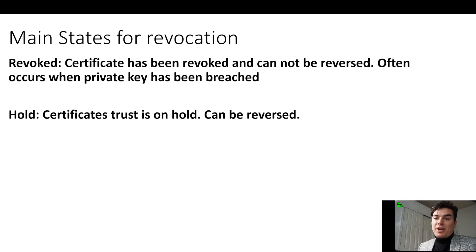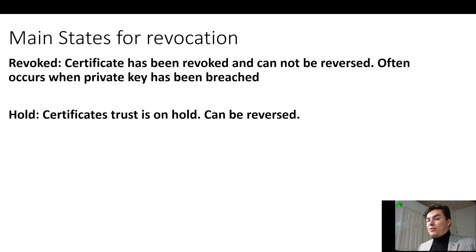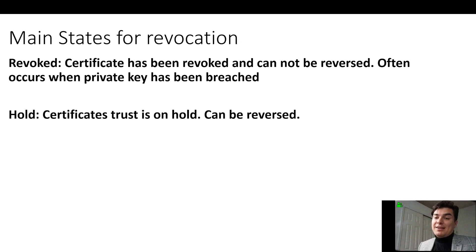Now the main states for revocation: either the certificate has been revoked and it can't be reversed — that often occurs when the private key has been breached — or the certificate trust is on hold and that can be reversed. They would place a certificate on hold if there was a possible breach but they're not 100% sure. If the investigation finds that nothing was wrong, they'll go ahead and reactivate that certificate. However, if it was compromised, then they're going to completely revoke it.